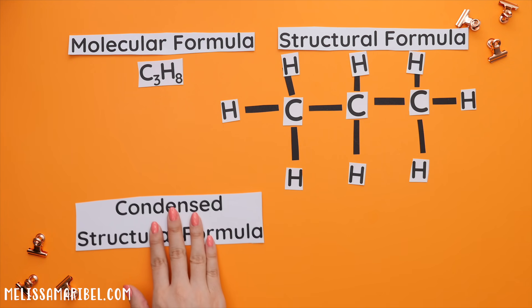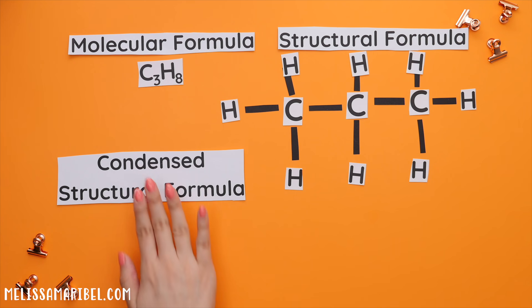The third way is called a condensed structural formula. To write this formula, we looked at the structural formula where on the first carbon to the left, there are three hydrogens attached. This is why we have CH3.